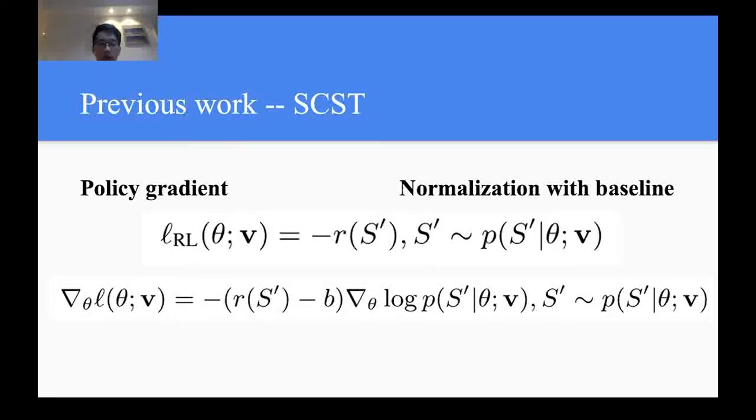Previous work on reinforcement learning in natural language generation directly optimizes the automatic scores. It treats the network as the agent, sampling a word from output probability as the action, and the automatic score as the reward. Therefore, training and evaluation are conducted in a similar manner. Policy gradient is used to estimate the gradient to network parameters based on the reward.